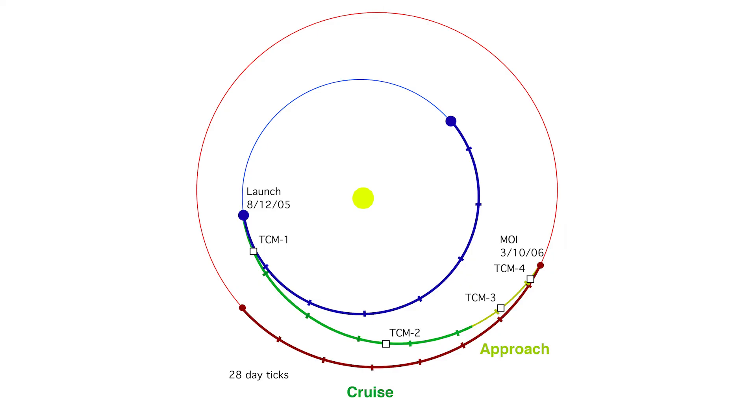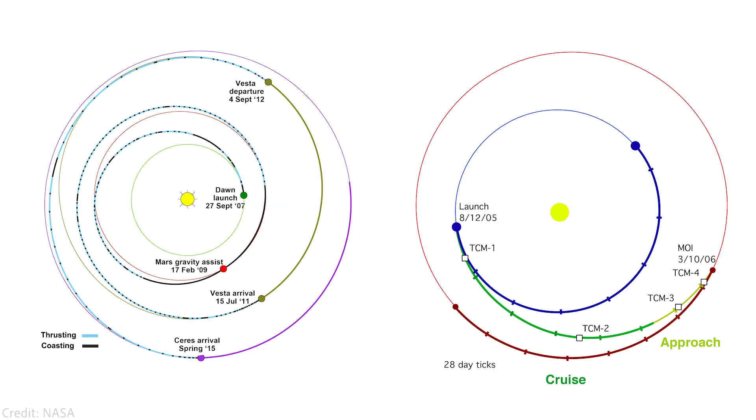And it only had only 425 kilograms of xenon. In comparison, MRO spacecraft had to only reach Mars like this, and it had 1187 kilograms of hydrazine, and 70% of which was used during a single maneuver of entering the orbit of Mars. Obviously, it's not a one-to-one comparison, but you get the point.